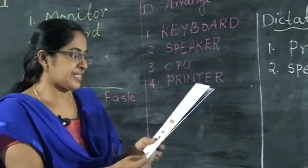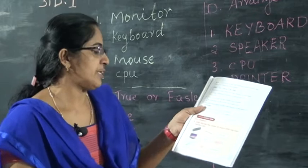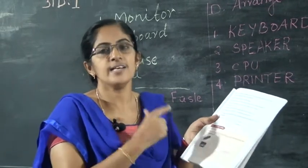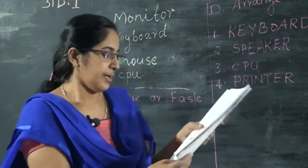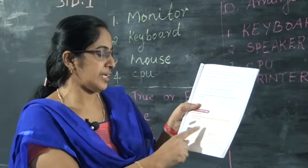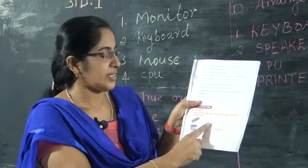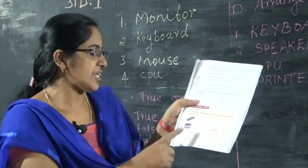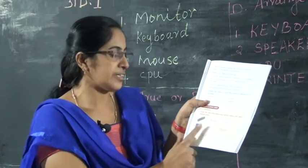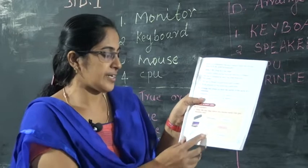Page number 27. Color the box that shows the correct name using your favorite color. First: identify the picture — keyboard or mouse? The correct answer is keyboard. Second: CPU or monitor? The correct answer is monitor. Third: mouse or keyboard? The correct answer is mouse.